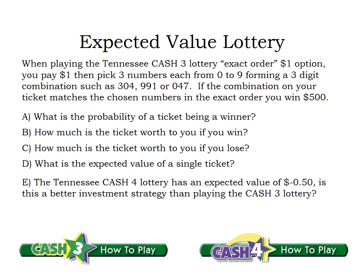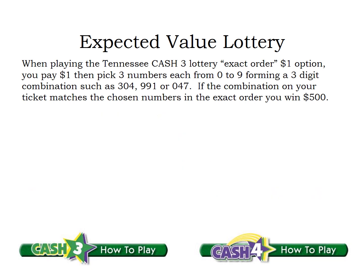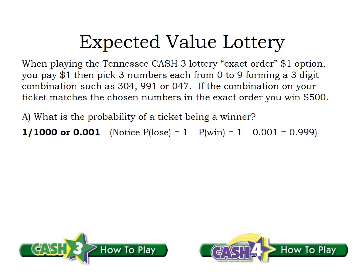Or if you prefer, just think of it as an actual three-digit number: 000 would be the smallest, then 001, 002, all the way up to 999 — that's a thousand different combinations. We pay a dollar, and if our combination comes up as the winner, we win $500. So the probability of a ticket being a winner, if there are a thousand different combinations and only one of them wins, is simply one in a thousand, or 0.001.